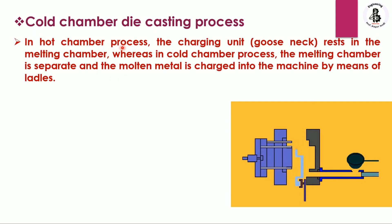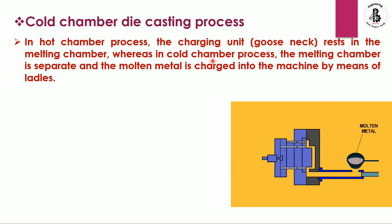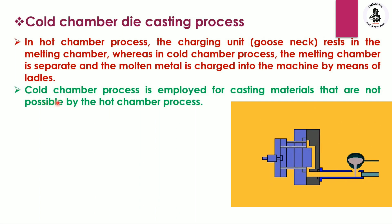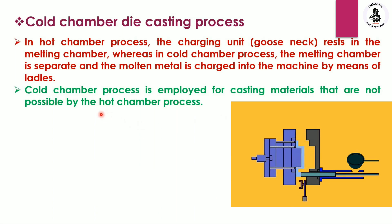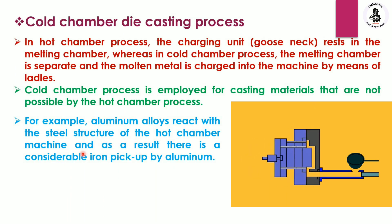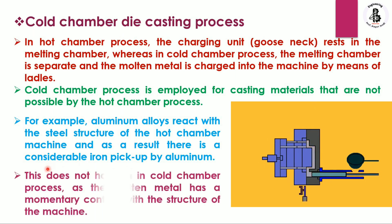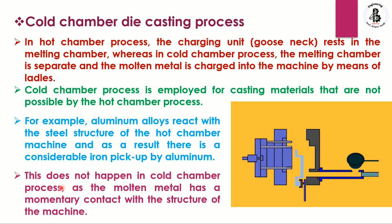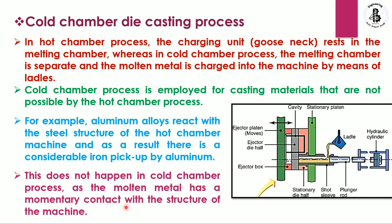In the hot chamber process, the charging unit or gooseneck rests inside the melting chamber. Whereas in the cold chamber process, the melting chamber is separate and the molten metal is charged into the machine by means of a ladle. For example, aluminum alloys react with the steel structure of hot chamber machines, resulting in considerable iron pickup by the aluminum. This does not happen in the cold chamber process, as the molten metal has only momentary contact with the machine surfaces.